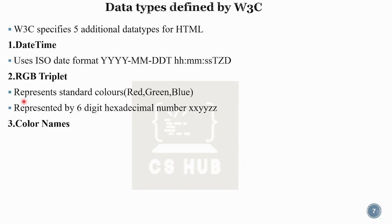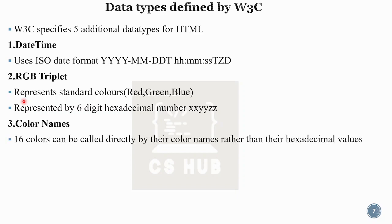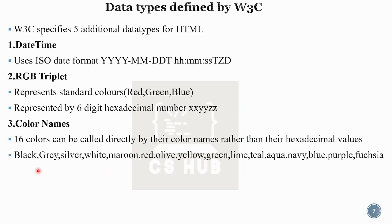Color names: there are 16 colors that can be called directly by their color names rather than their hexadecimal values. These 16 colors include: black, gray, silver, white, maroon, red, olive, yellow, green, lime, teal, aqua, navy, blue, purple, and fuchsia.